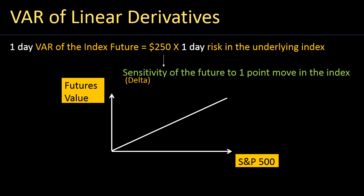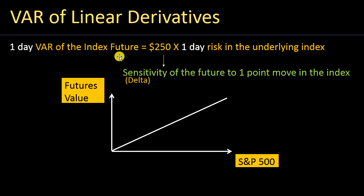We are going to have a quick look at how to calculate the VAR of linear derivatives. We'll look at the concept through a simple example on how to calculate the one-day value at risk of an index future. An index future is a linear derivative where the value of the futures index is related to a multiple — in this case $250 — multiplied by the movement in the underlying index, the S&P 500.